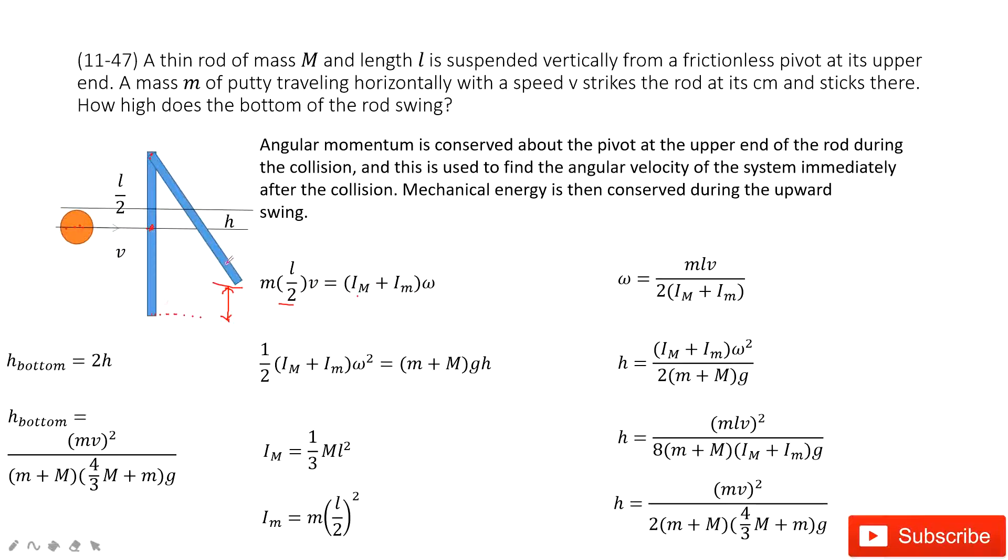Now it moves up. Mechanical energy is conserved, so the initial mechanical energy after this collision is one half I omega squared and equals the total mass (m + M) times gh. This is the gravitational potential energy. Energy is conserved.